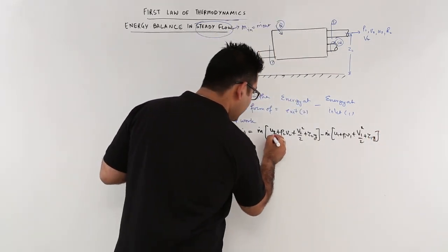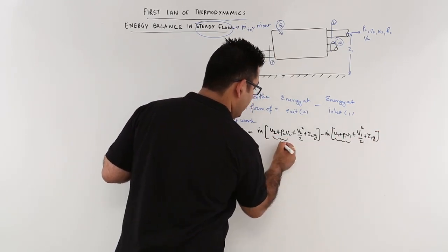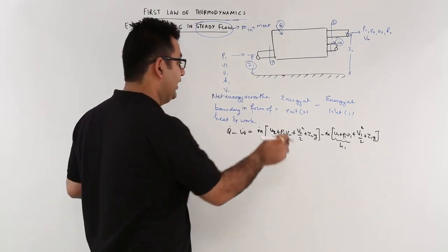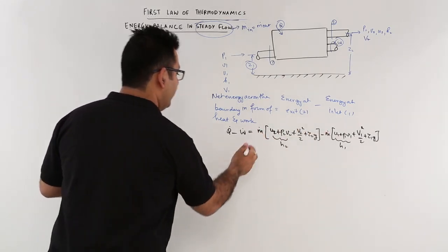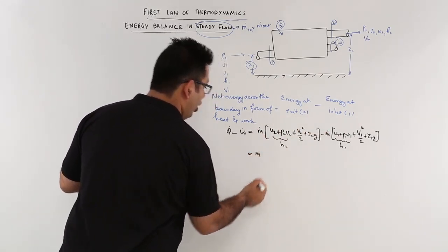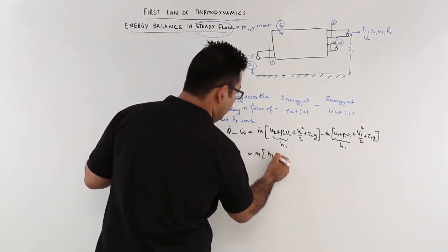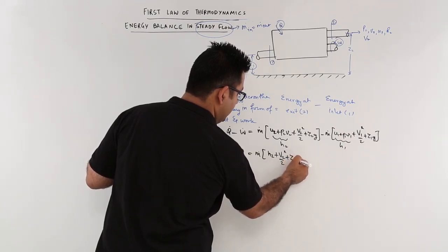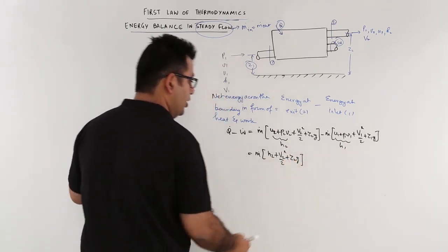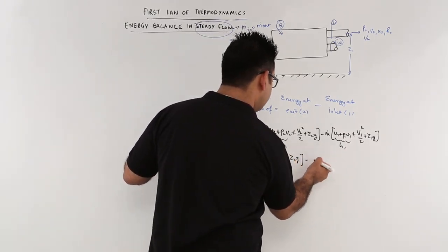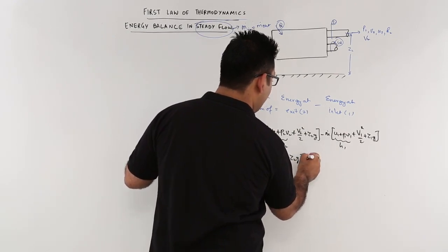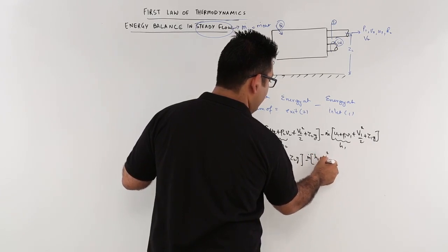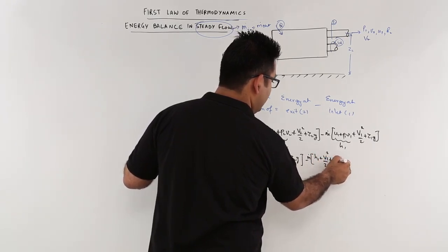If you combine these terms U plus PV, this is H2 and this is H1, that is enthalpy at exit and at inlet. So this becomes M dot into H2 plus V2 squared by 2 plus Z2G minus M dot into H1 plus V1 squared by 2 plus Z1G.